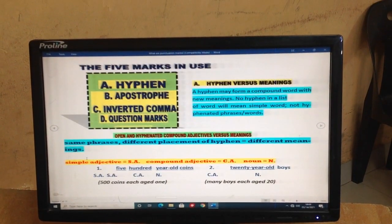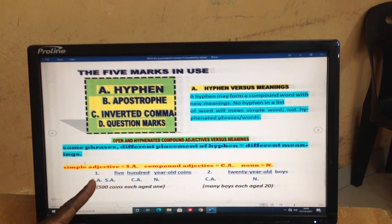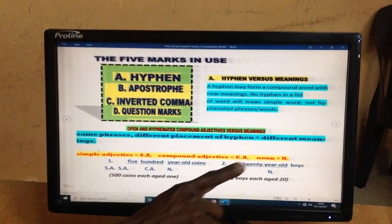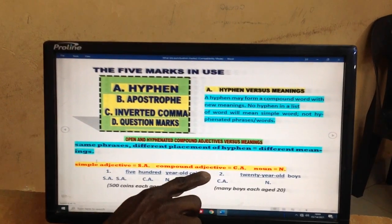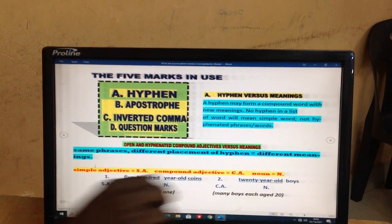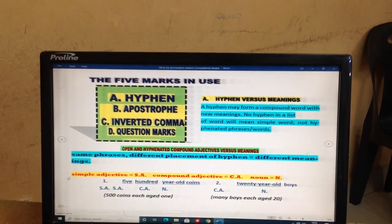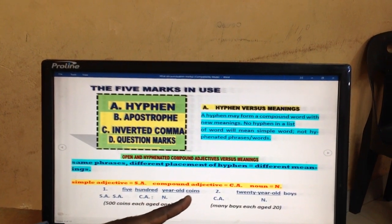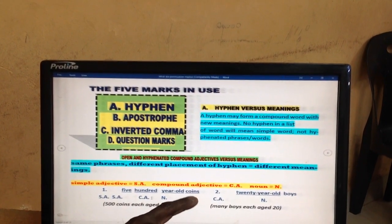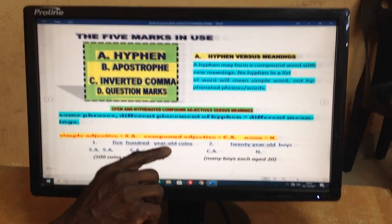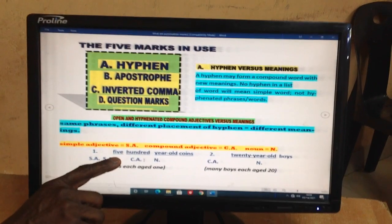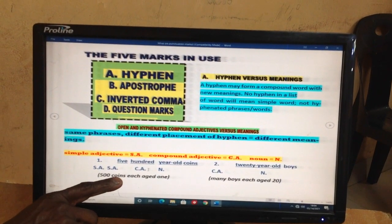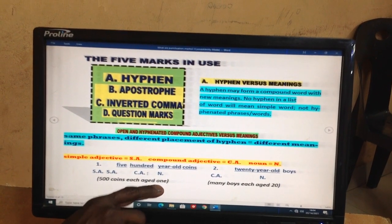Now, the practical aspect. I want to show you, first of all, to say, when you see S-A, it means simple adjective, just one. When you see C-A, it means compound adjective. N is for a noun. Let's get the first one. Number one. It's the same phrase. 500 year old coins. Coins is the noun. This is C-A, compound adjective. 5 is a simple adjective. So it means here, 500 coins, each aged one.